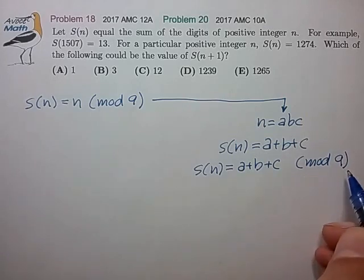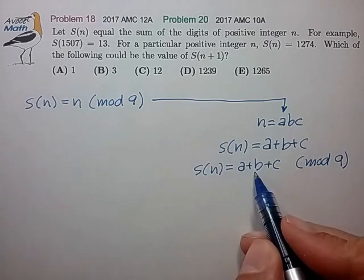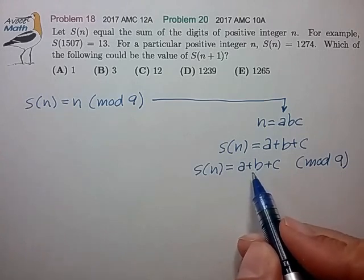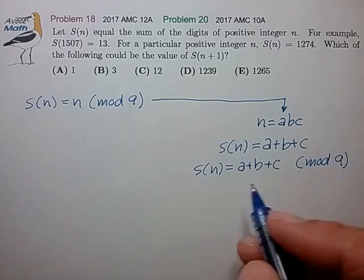So we know then that the sum of digits in mod 9 is also given by a plus b plus c. But now in mod 9 we can do something very clever. We can replace the coefficient of 1 in front of the digit a and 1 in front of the digit b with any number that is also equal to 1 in mod 9.